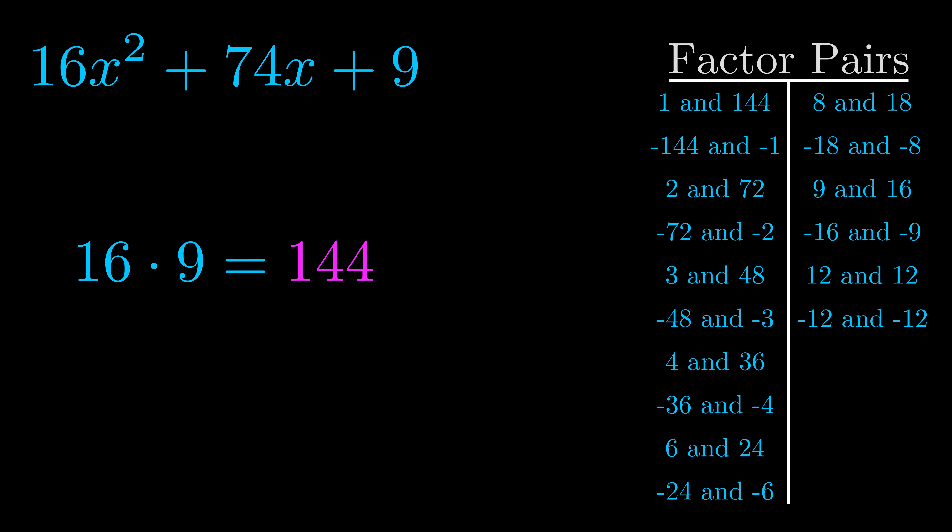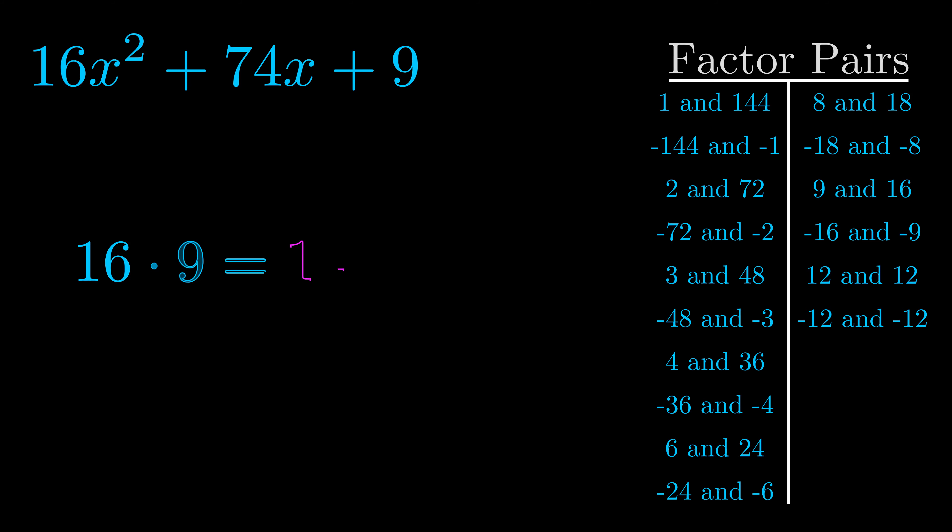Now once you have these factor pairs the goal is to find which of these pairs adds to the b value. The b value is the coefficient on the x term. That's the middle term, the one that we haven't done anything with yet. And really this is the only factor pair that we need.